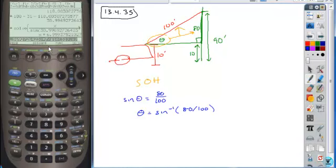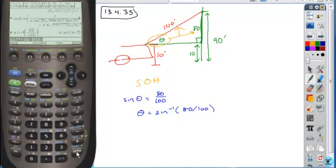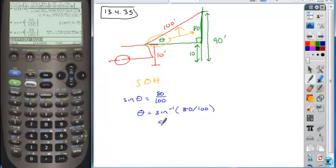And calculating that, again, making sure we're in degree mode. We take the inverse sine of 80 divided by 100, put it in decimal form, and we get approximately 53.13 degrees is our angle measure.